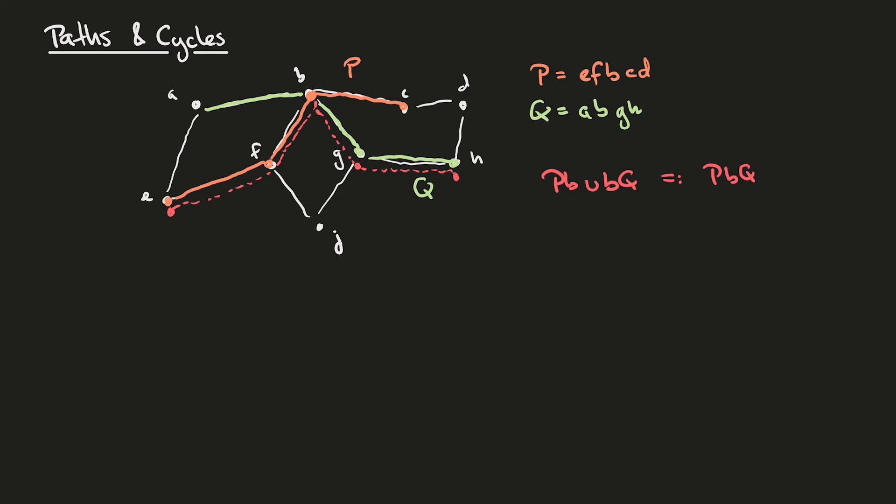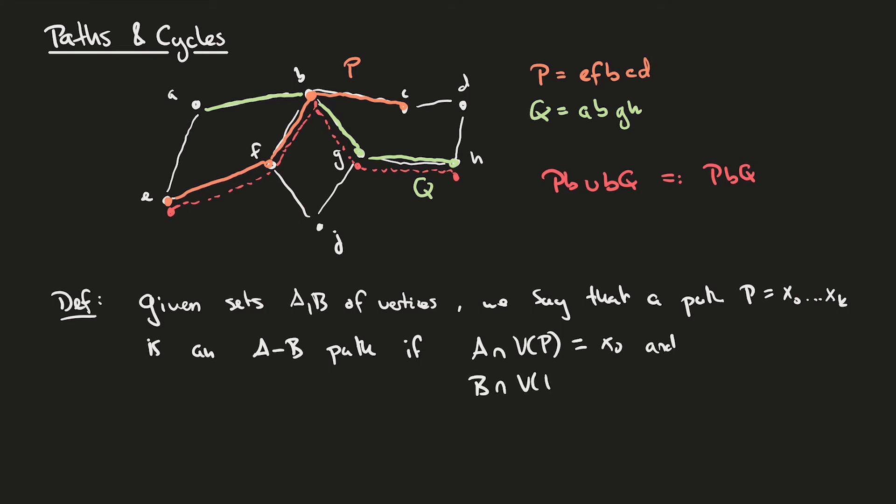Next, we'll introduce some concepts concerning paths between given sets. For this, we make the following definition. Given two sets, A and B of vertices in some graph G, we say that a path P, which is x0 up through xk, so this is indicating the path by the sequence of its vertices, such a path is an AB path if A intersection with the vertices of P is equal to x0, and B intersection with the vertices of P is equal to xk.